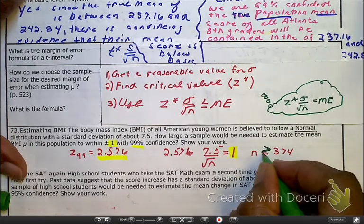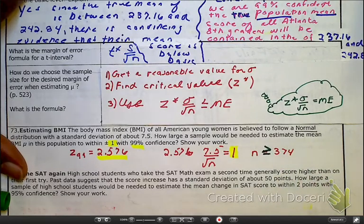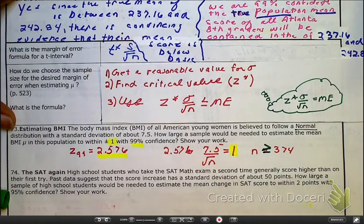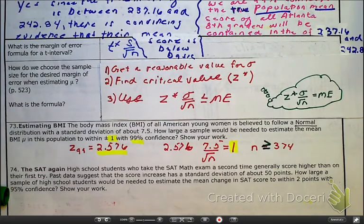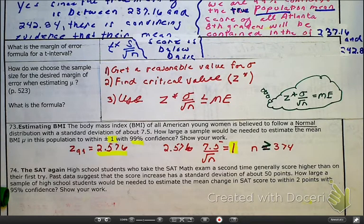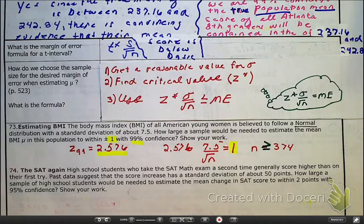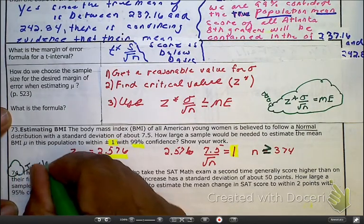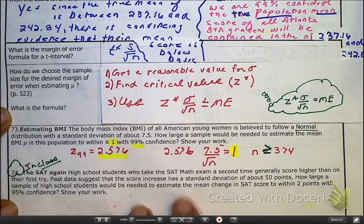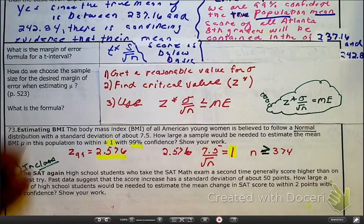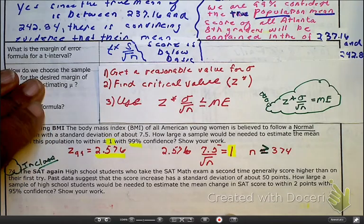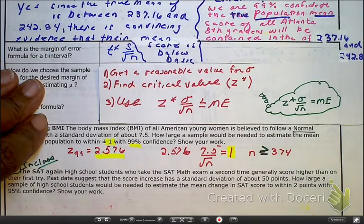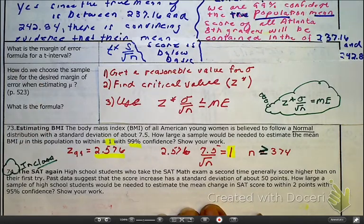Yes, you would be considered wrong if you said n is equal to 374 because we're saying, at minimum, I want 374. So let's go ahead and do the math.